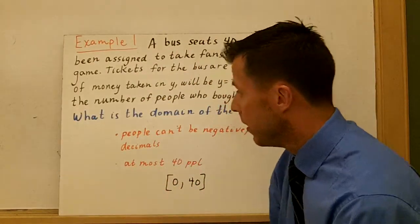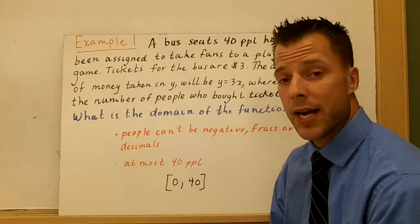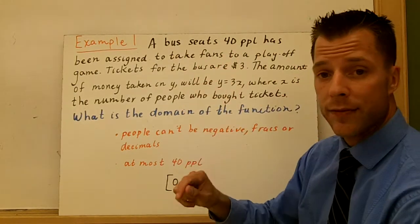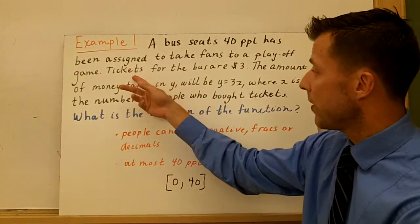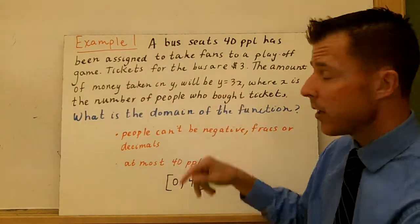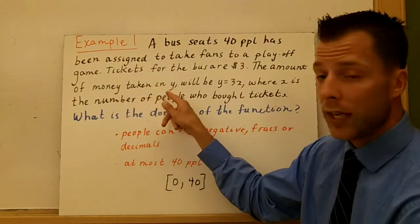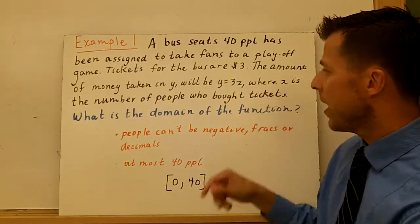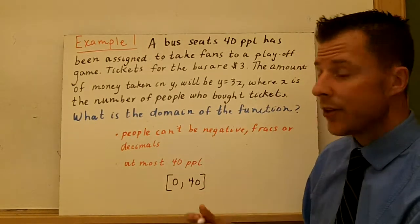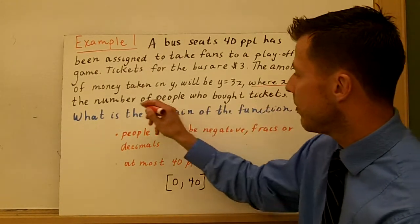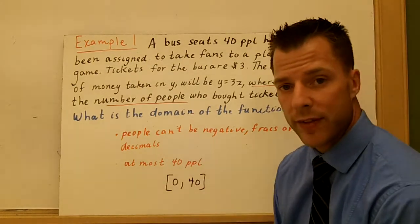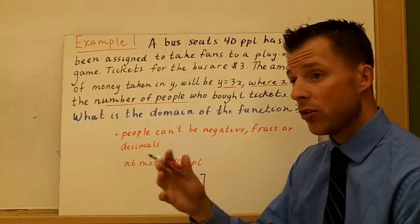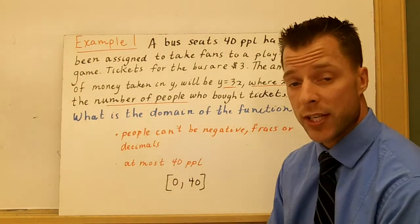So let's look at an example. In this first one, this problem has context. So we have a bus that seats 40 people has been assigned to take some fans to a playoff game. Tickets for the bus are $3. The amount of money taken in y will be y equals 3x, where x is the number of people who bought tickets. Now there's the key. X is the number of people. We want to know what the domain of that function is. So yes, I have a linear equation. And you might say the domain of any linear equation is all real numbers, which it is.